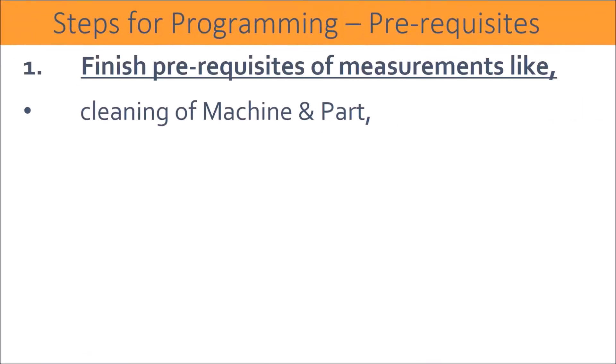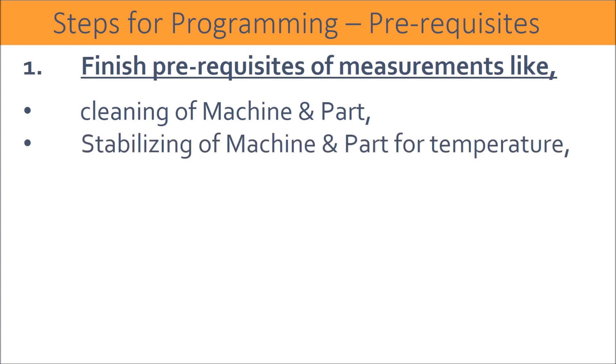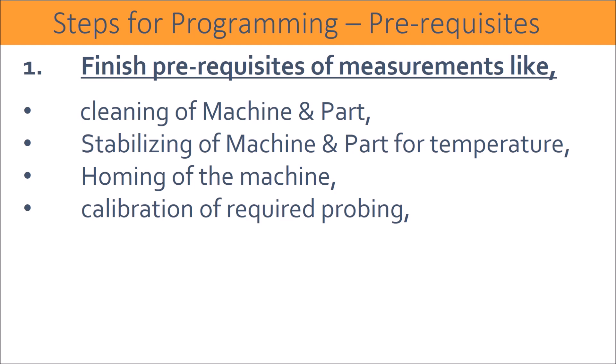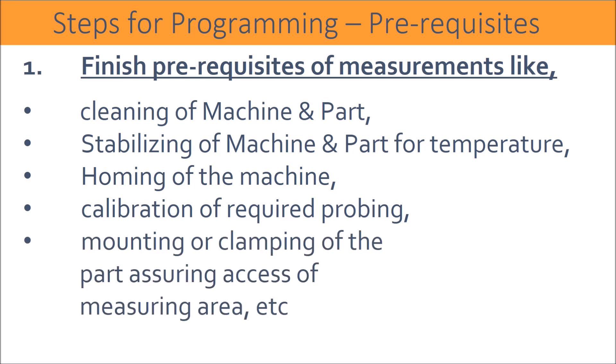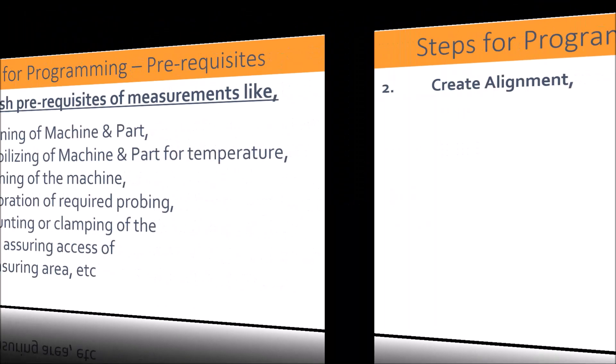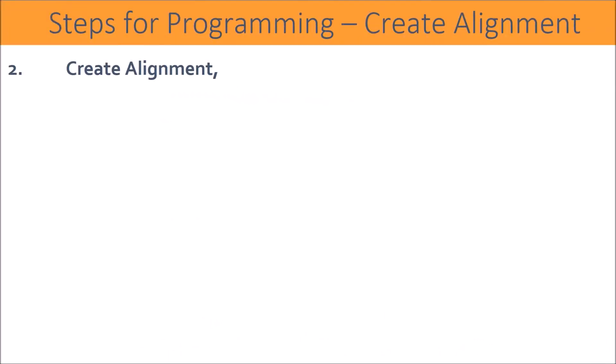For any machine finish requirements, prerequisites of measurements include: cleaning of machine and part, stabilizing of machine and part for temperature, homing of the machine, calibration of required probing, and mounting or clamping of the part — assuring alignment of the measuring area and part to the machine. Then create alignment.